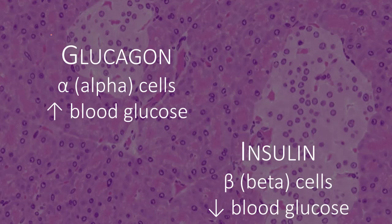In the pancreas, glucagon is released by alpha cells to raise blood glucose levels between meals. Insulin is released from beta cells and decreases blood glucose after a meal, sending the glucose into the cells or to storage areas.